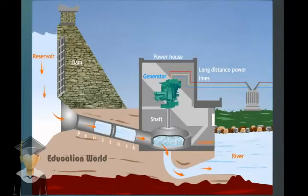The turbine, in turn, rotates the shaft that is connected to the coils of a generator.